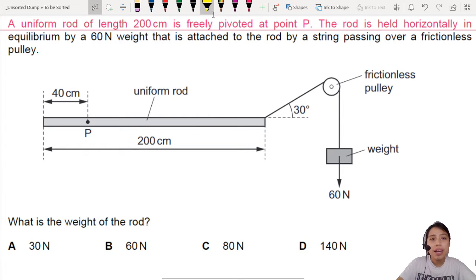Here we have a rod in equilibrium, 200 cm, freely pivoted at P. When you see the word pivoted, you want to poke the pivot right there. See, right over there, that's your pivot.